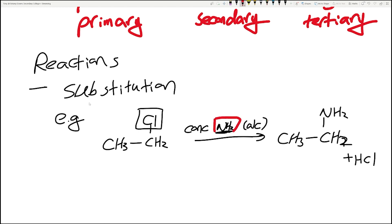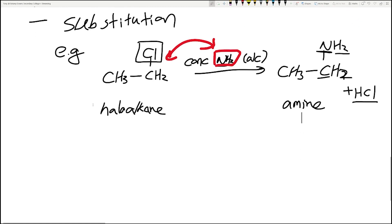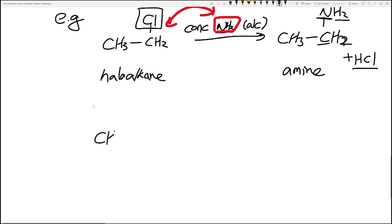You don't necessarily need to memorize too many things - you just substitute. You swap in the NH2; the nitrogen needs to bond three times so that's why it has two H's, because it's bonding to a carbon. The Cl group is substituted out, so you've gone from a haloalkane and turned it into an amine.